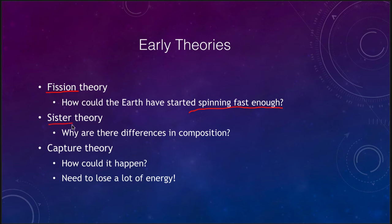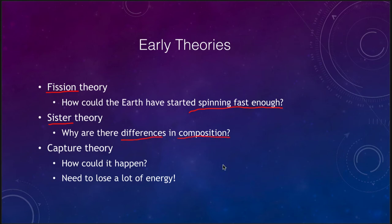Another is what we call the sister theory: that the Earth and the moon just formed together. We think this happened for some of the outer planets, especially their major moons. For example, the Galilean moons of Jupiter are believed to have formed around Jupiter much as the planets formed around the Sun. But big questions remain: why is the Earth the only place this happened in the inner solar system? Mercury and Venus have no moons, and Mars has two small ones which may be captured asteroids. And also, why are there differences in composition between the Earth and the moon?